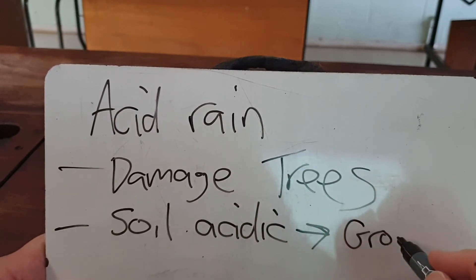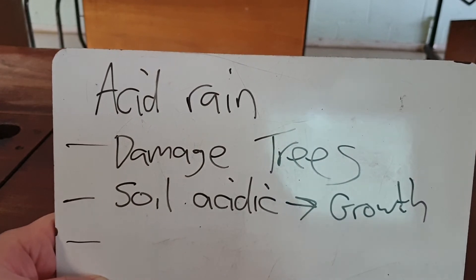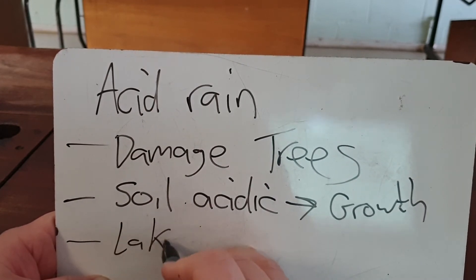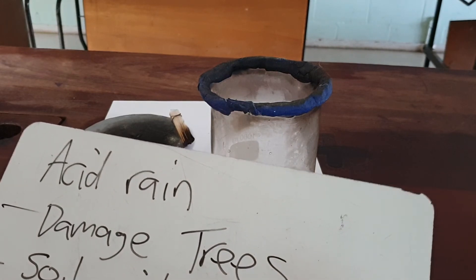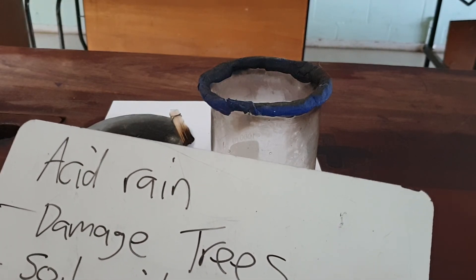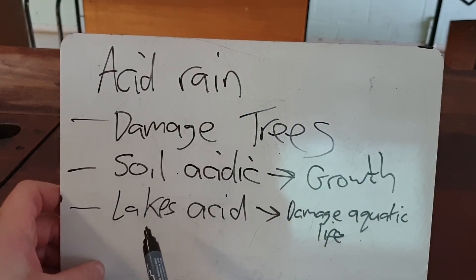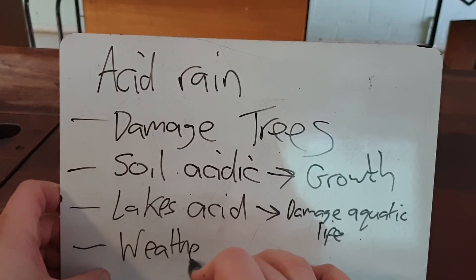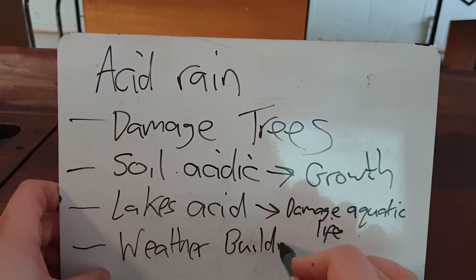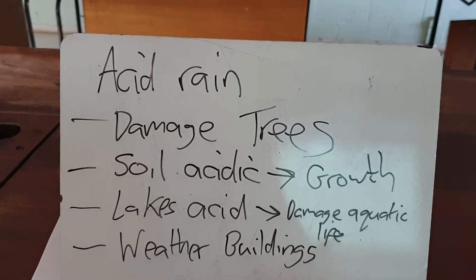All that acidic water flows into rivers and lakes, and if it makes lakes acidic it can damage aquatic life — plants and marine life get damaged as rivers and lakes become acidic. Acid rain can also weather buildings; limestone, which is calcium carbonate, reacts with acid, so it speeds up the weathering of limestone buildings.